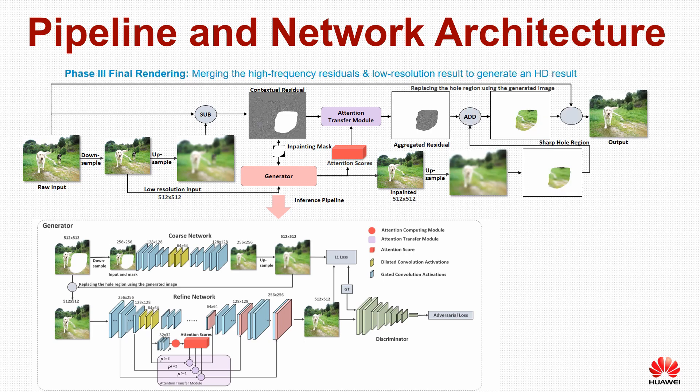In the last phase, we upsample the low-resolution inpainting result to obtain a high-resolution blurred result. We add the aggregated residue to this blurred result to get a sharp result. The final result is obtained by pasting the hole region back into the raw input image.